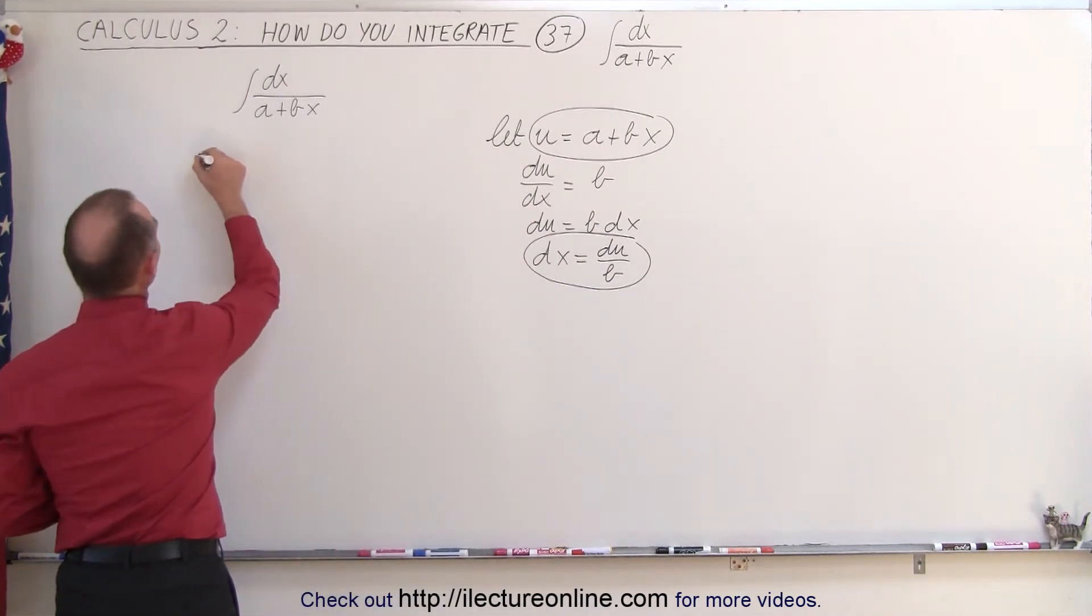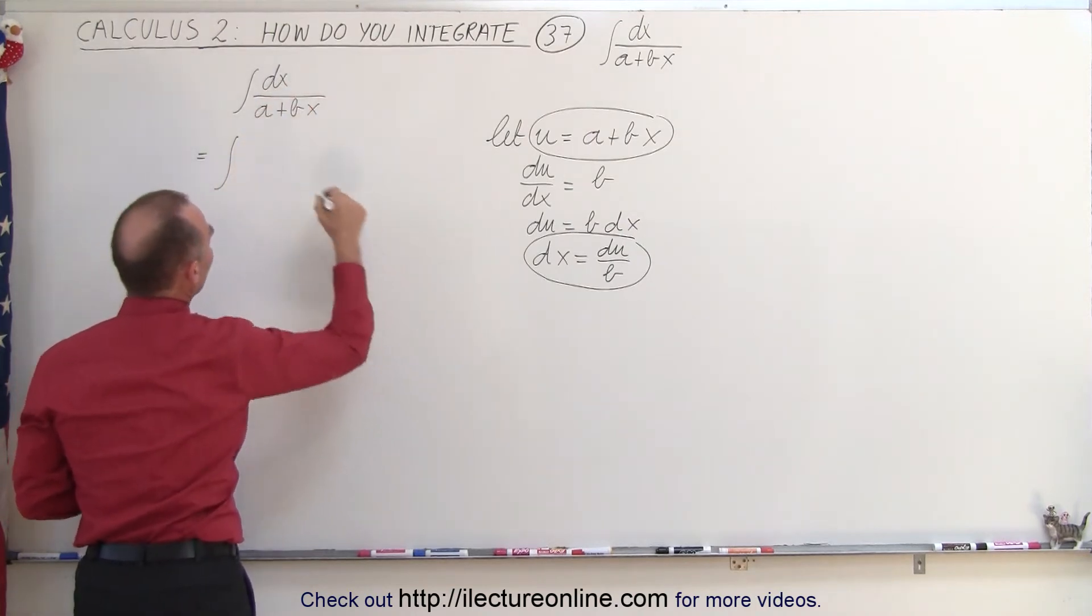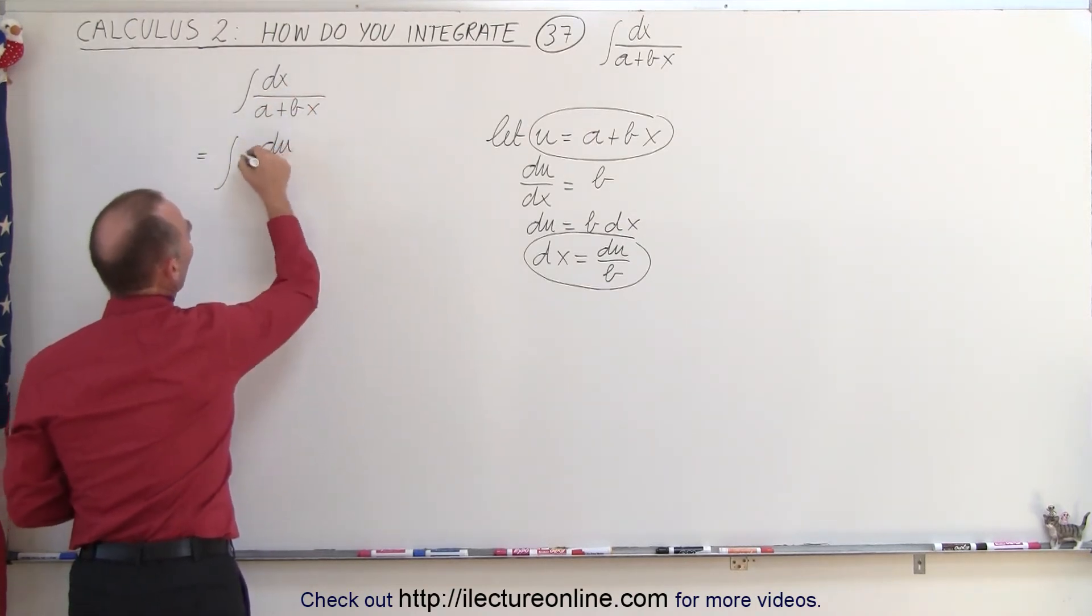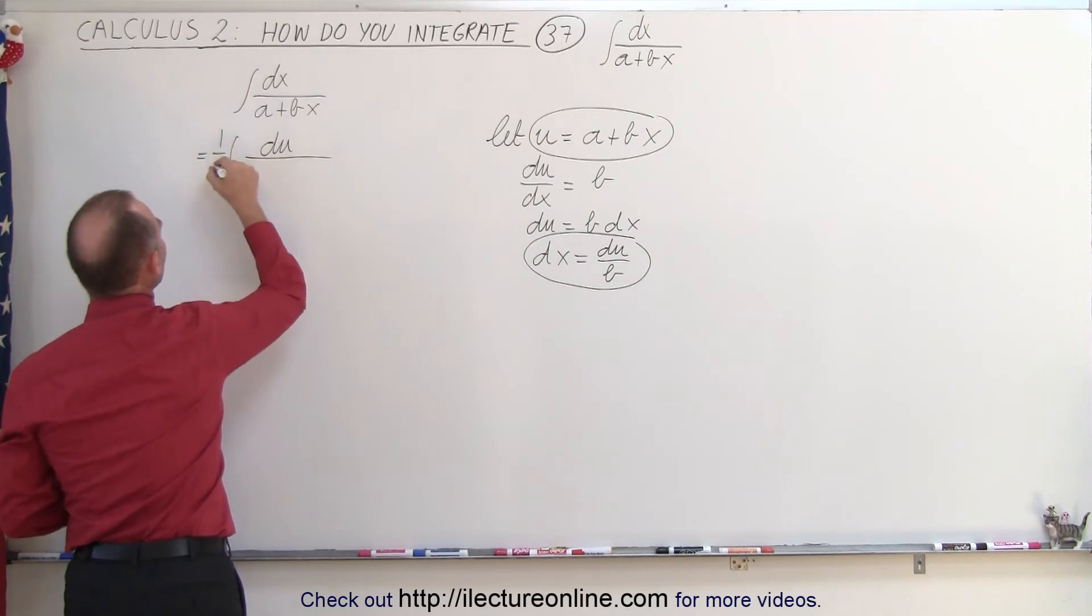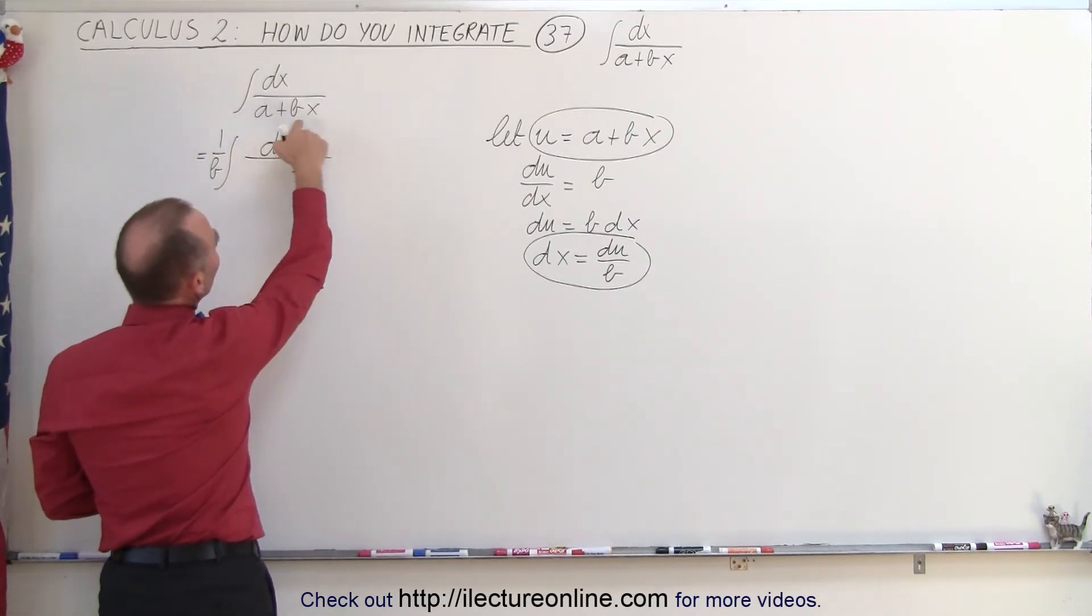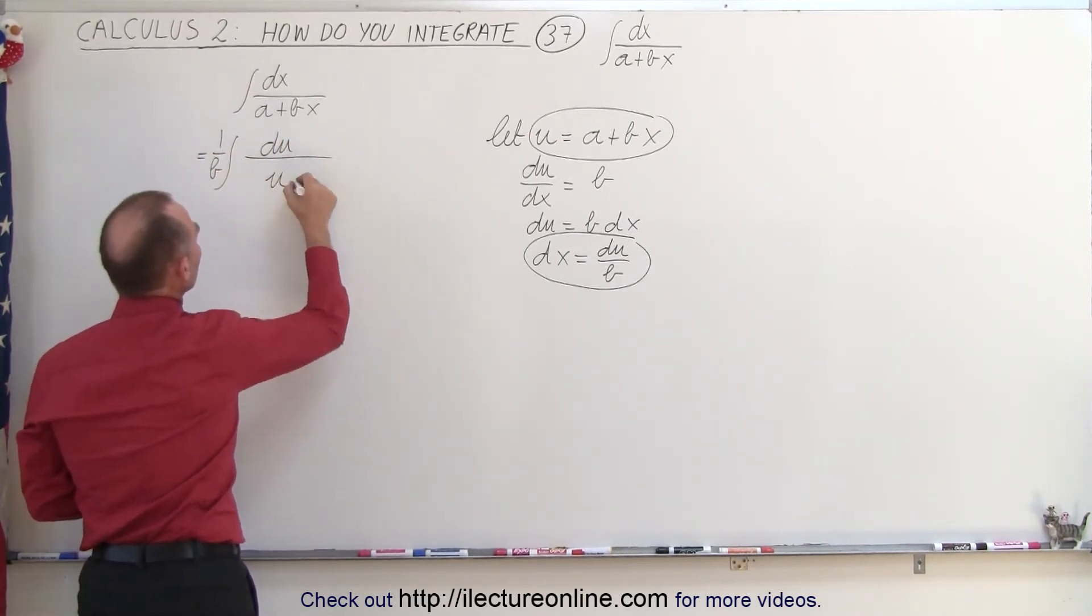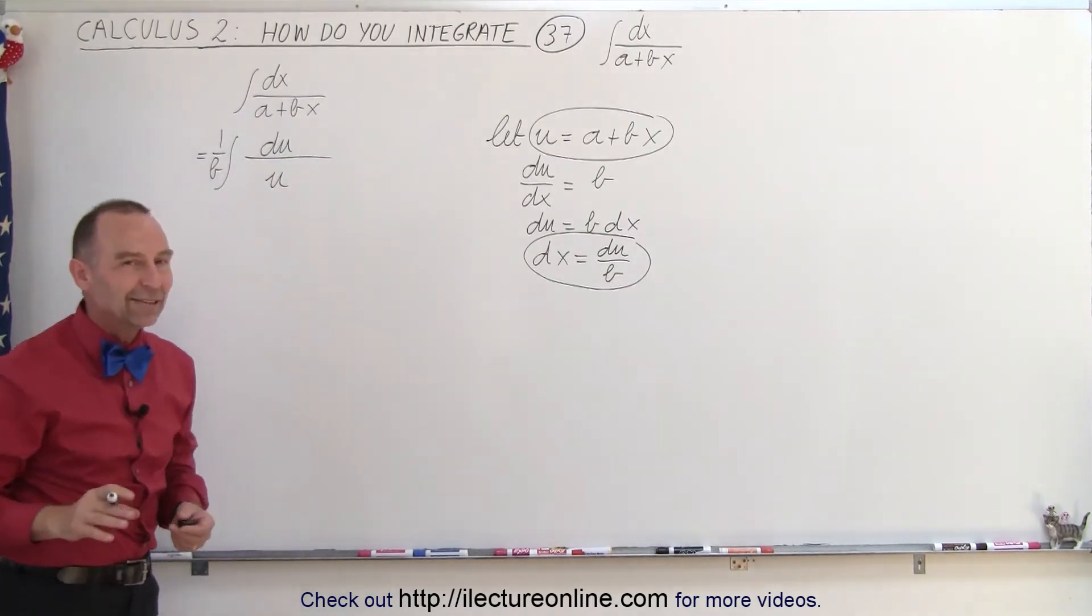So this becomes equal to the integral of, instead of dx, we write du over b. Let's take the b outside the integral sign, and then in the denominator, instead of a plus bx, we simply write u. That, of course, is a really easy integral.